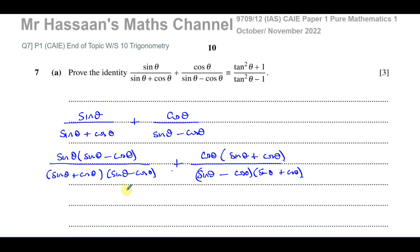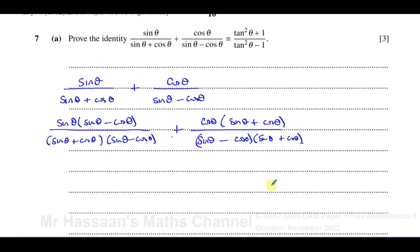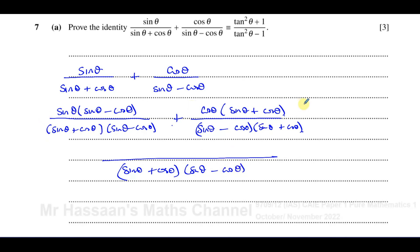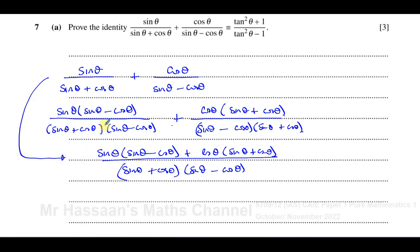Now we notice that both fractions have the same denominator, so I can write it as one combined fraction: sine θ(sine θ − cosine θ) + cosine θ(sine θ + cosine θ), all over (sine θ − cosine θ)(sine θ + cosine θ). We could have gone from the original expression to this in one step — some people just memorize the shortcut — but I wanted to show exactly what's happening and the reasoning behind it.